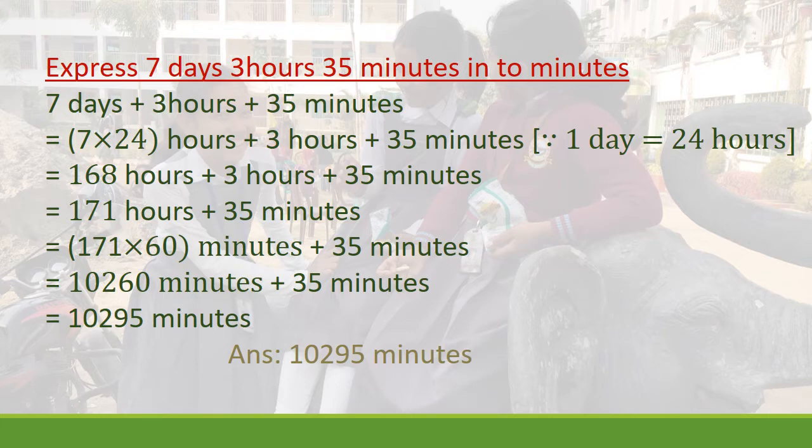Next line: 7 × 24 is 168 hours, plus 3 hours plus 35 minutes. The first two parts of this line are in hours — 168 hours and 3 hours — so we add them. The next line is 171 hours, plus 35 minutes.